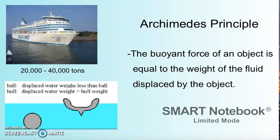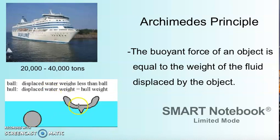Archimedes' principle says the buoyant force of an object is equal to the weight of the fluid displaced by the object. Have you ever wondered how a huge ship floats? Cruise ships weigh 20,000 to 40,000 tons — one ton is 2,000 pounds. These incredibly heavy ships float because they displace over that amount of water. A steel ball and a hull-shaped object may weigh the same, but the hull shape also has air in it, so it displaces a lot of water. The more water that is displaced, the better chance something can float.